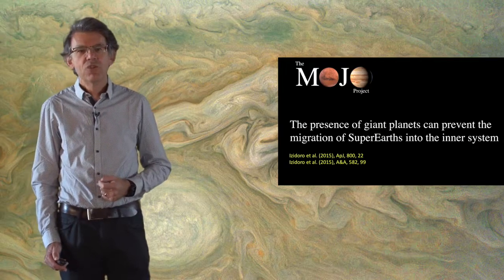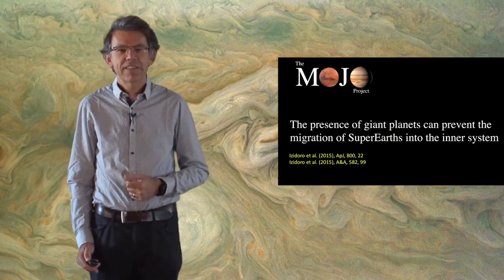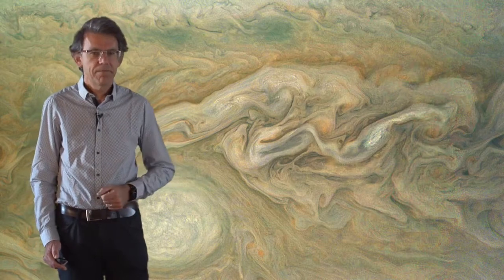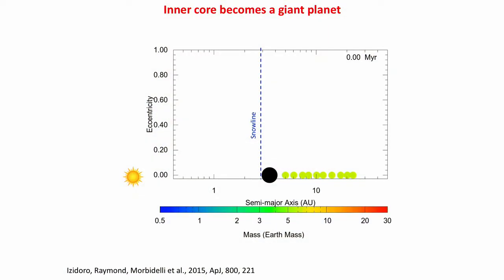In Mojo we show that the presence of giant planets can prevent the migration of super-Earths into the inner system. Let's imagine the case where the super-Earths form beyond the snow line, but the innermost one becomes big enough fast enough to accrete a lot of gas and become a giant planet.